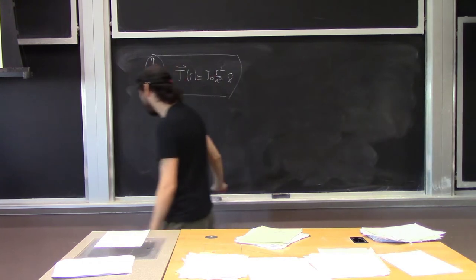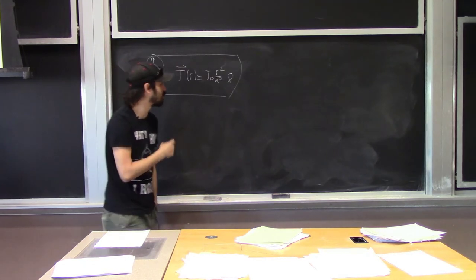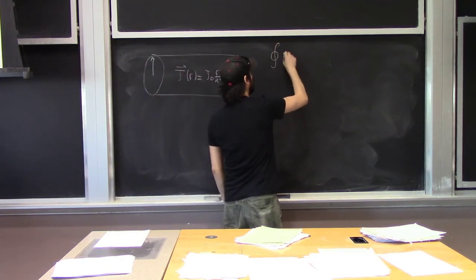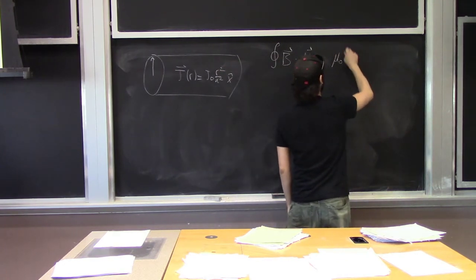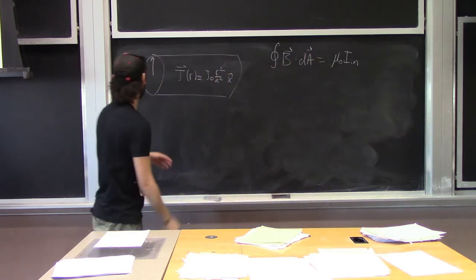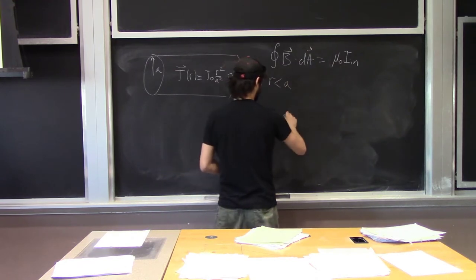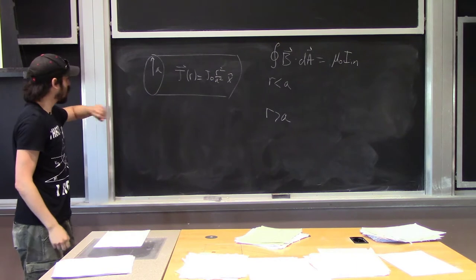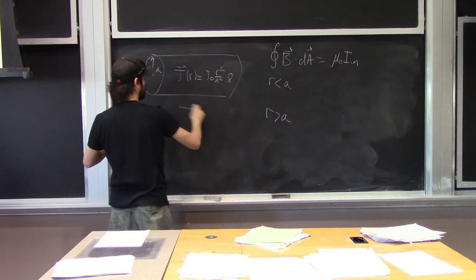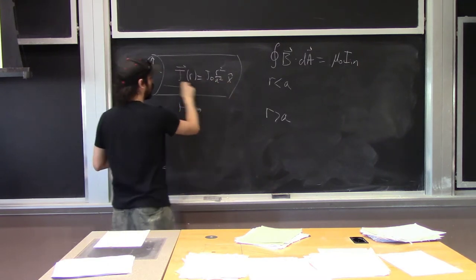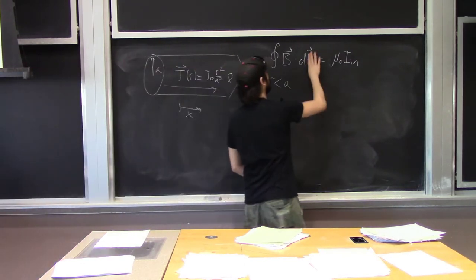We want to find what the magnetic field is everywhere for this problem, and we're going to do that by applying Ampere's Law. Ampere's Law says the integral over some closed loop of B dot dL is equal to μ₀ times I_in. There are going to be two regions: where R is less than A and where R is greater than A. The current density is pointing in the positive x-hat direction, so the current is moving left to right.